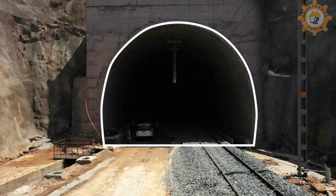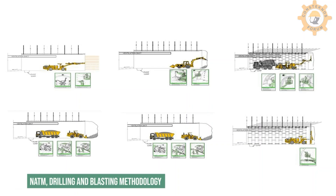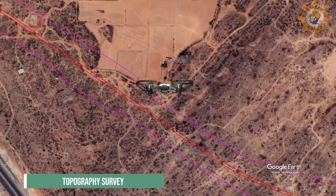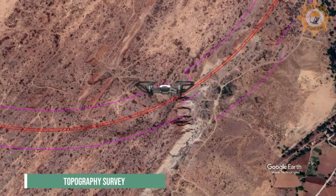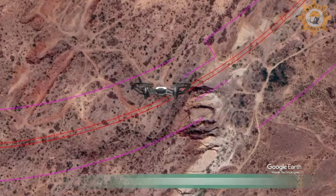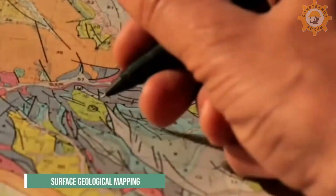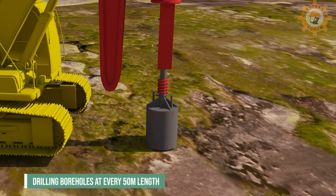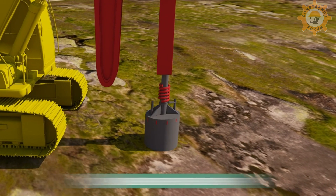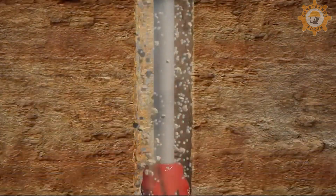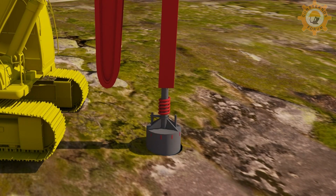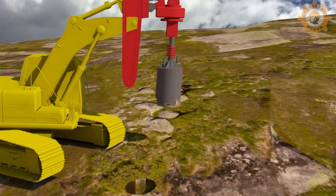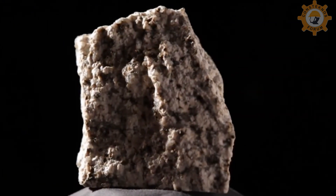The tunnel is constructed using NATM drilling and blasting methodology. A topographic survey was carried out for identification of the tunnel alignment and to assess rock cover over the tunnel crown. Surface geological mapping and preparation of geological maps were completed. Subsurface investigation was conducted by drilling boreholes at every 50 meters along the tunnel length, with investigation depth down to the invert level of the tunnel. Samples collected through boreholes were sent to the laboratory for testing and identification of engineering properties of the rock required for design.